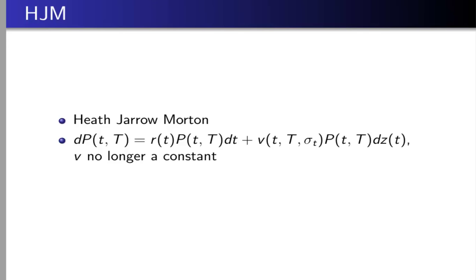So you have dP, you have a trend term which is proportional to P, and a noise term dz which is also proportional to P, which makes this log normal.